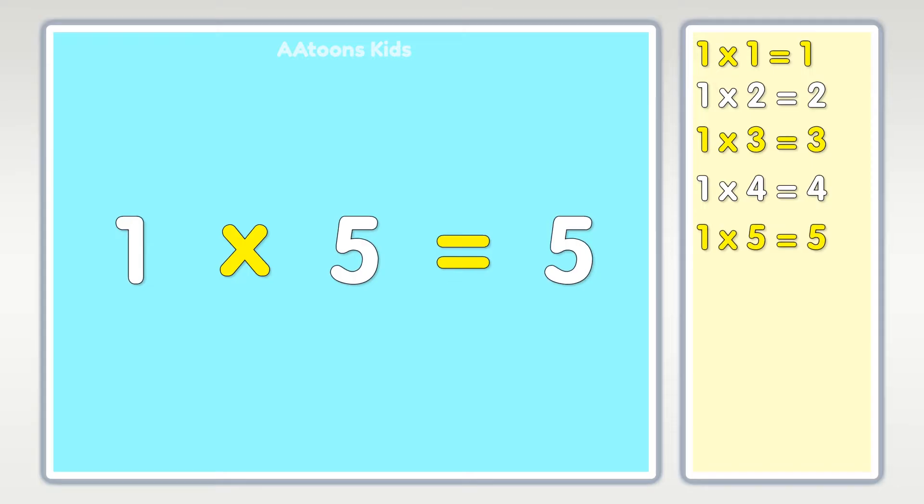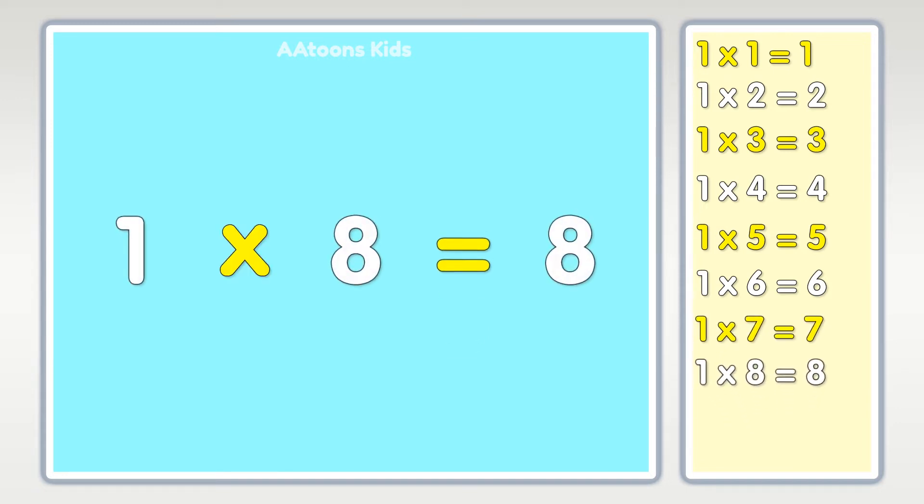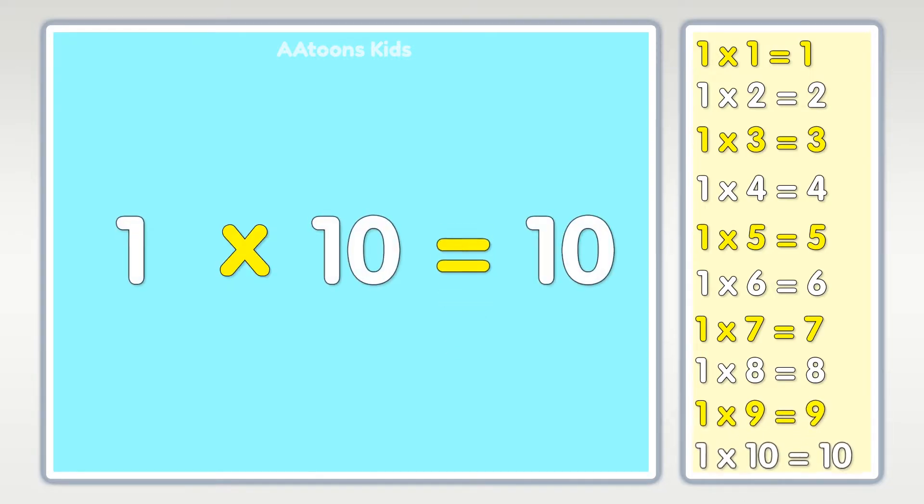One times five is five, one times six is six, one times seven is seven, one times eight is eight, one times nine is nine, one times ten is ten.